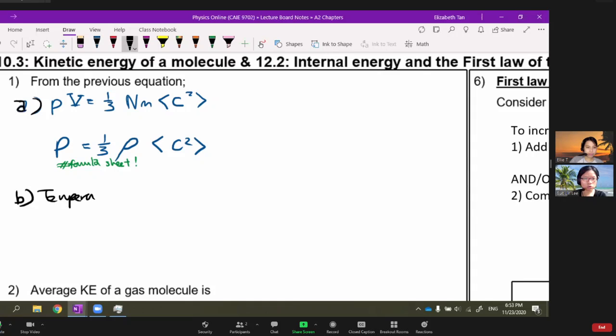If I stare at PV equals 1/3 Nm<c²> long enough, I would think about the other equation from 10.1, which is PV equals nRT or NkT. I use big N and kT because the first equation has big N for number of particles, and I like things that can cancel. So we're going to equate these two.